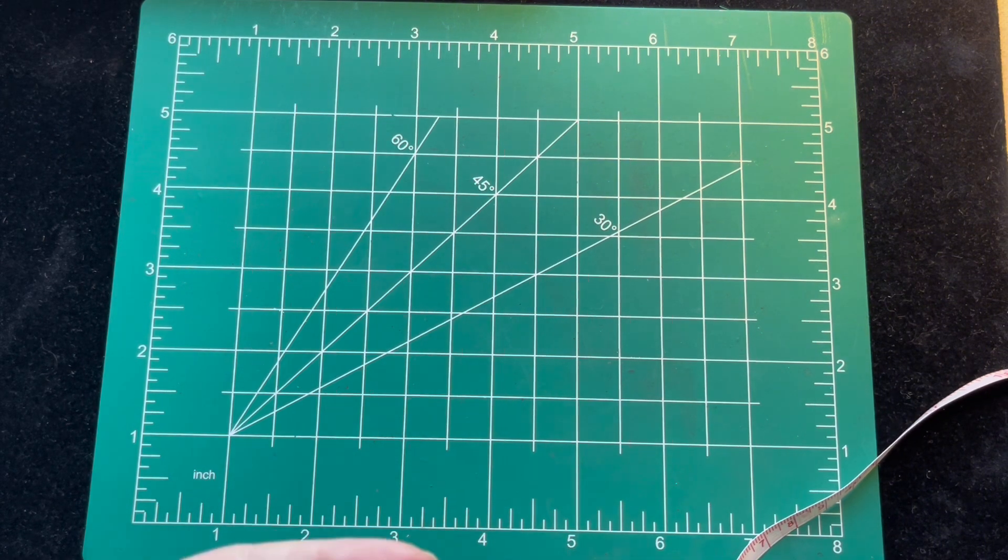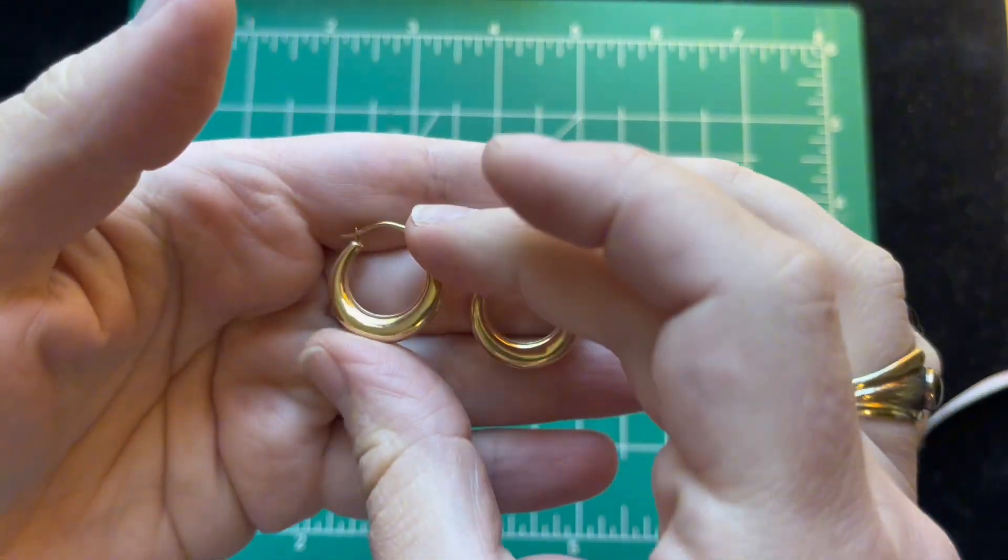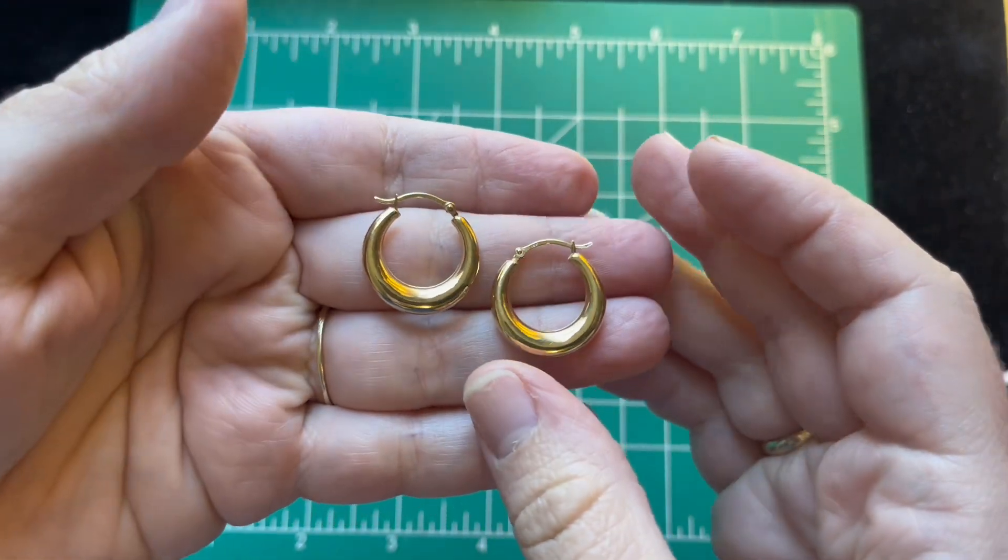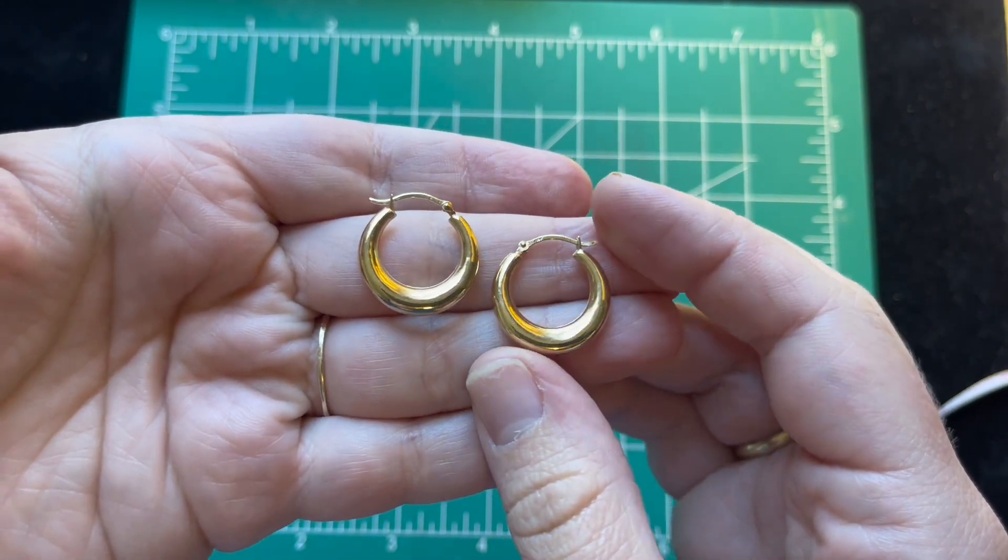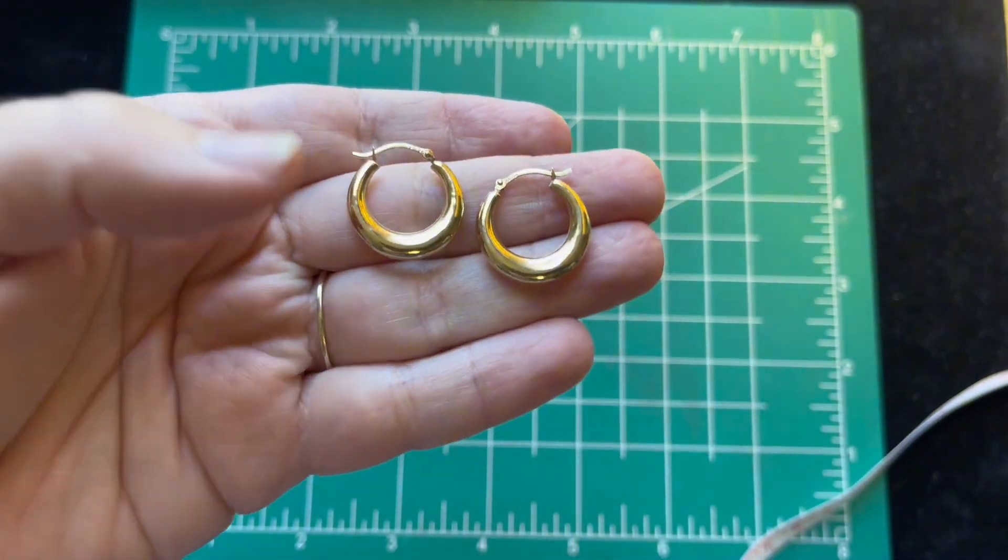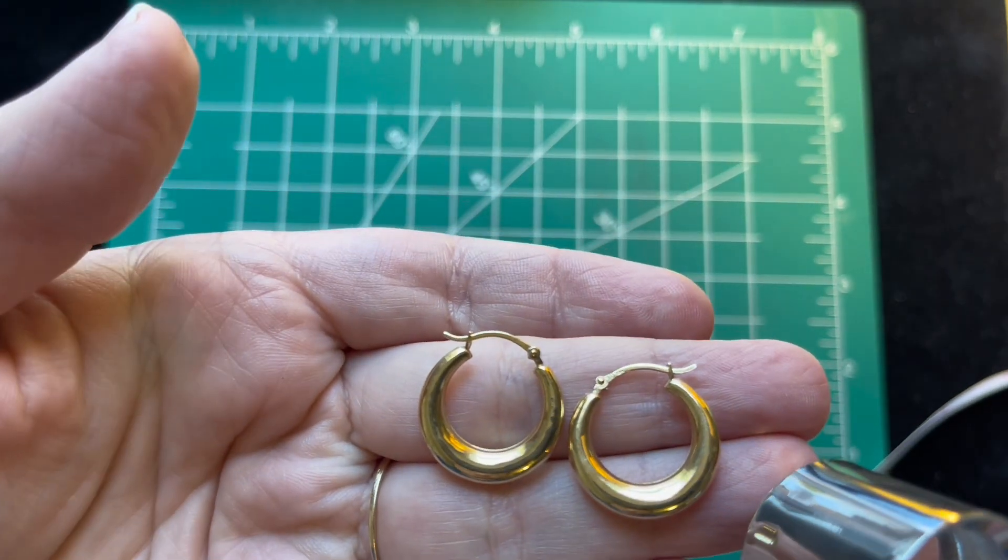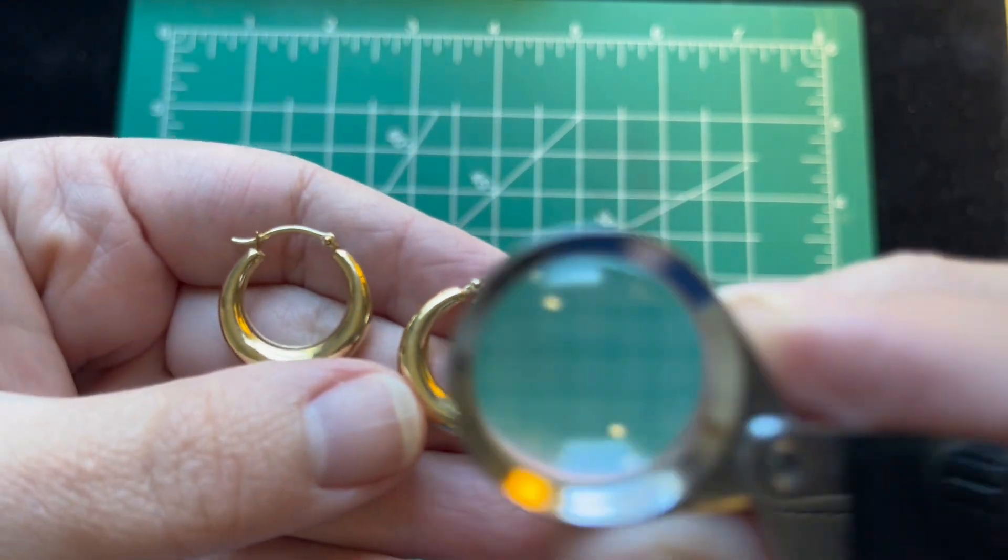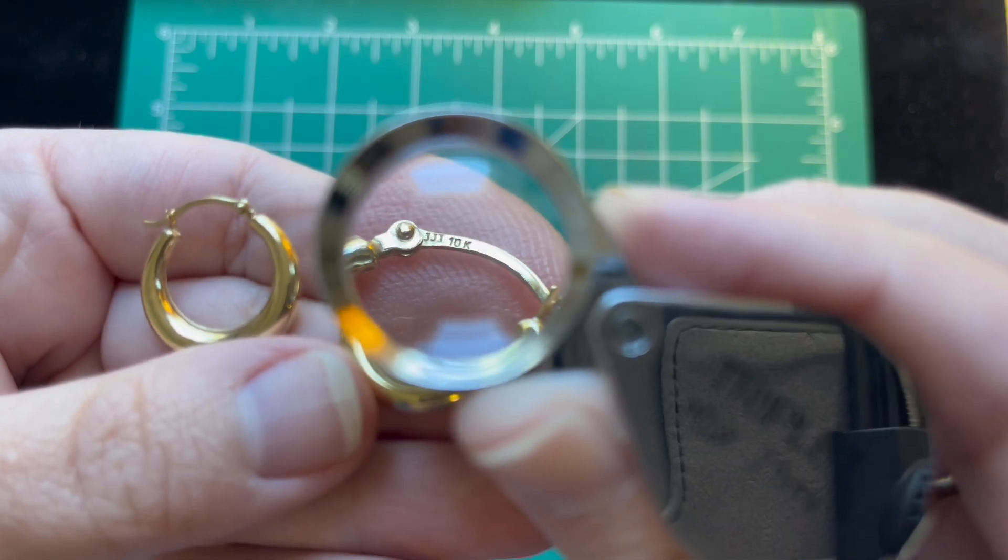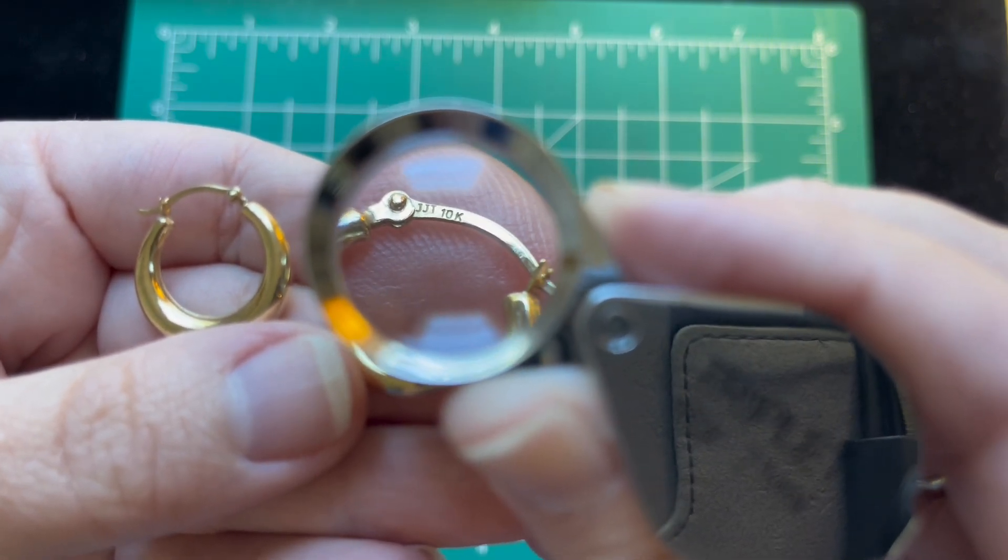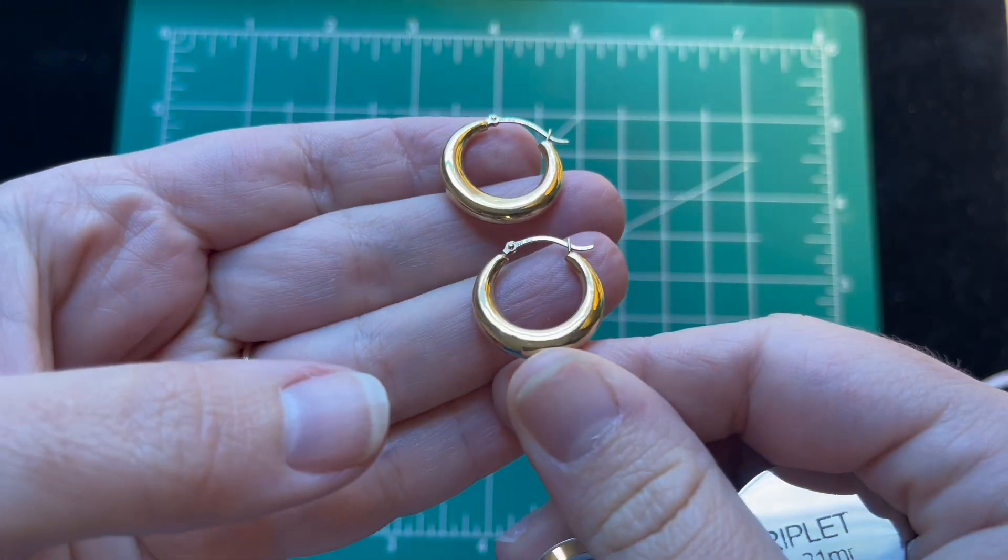These I've had for a while. I wore them a few times but just didn't reach for them a lot. So these are ten karat gold, just some hollow hoops. There's the mark. These are marked I think that's JJT ten karat. The other one's marked there.